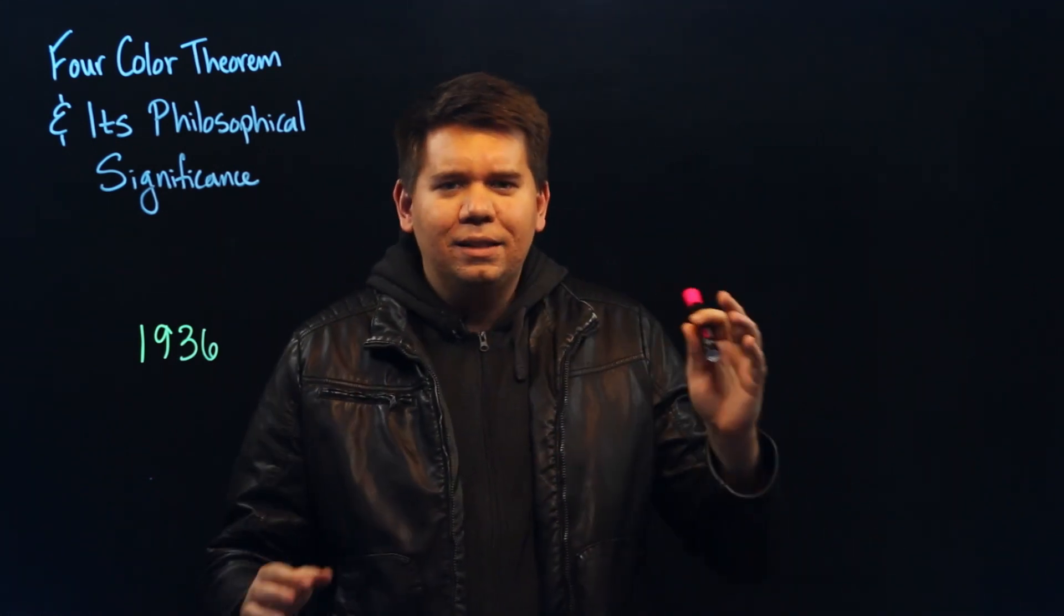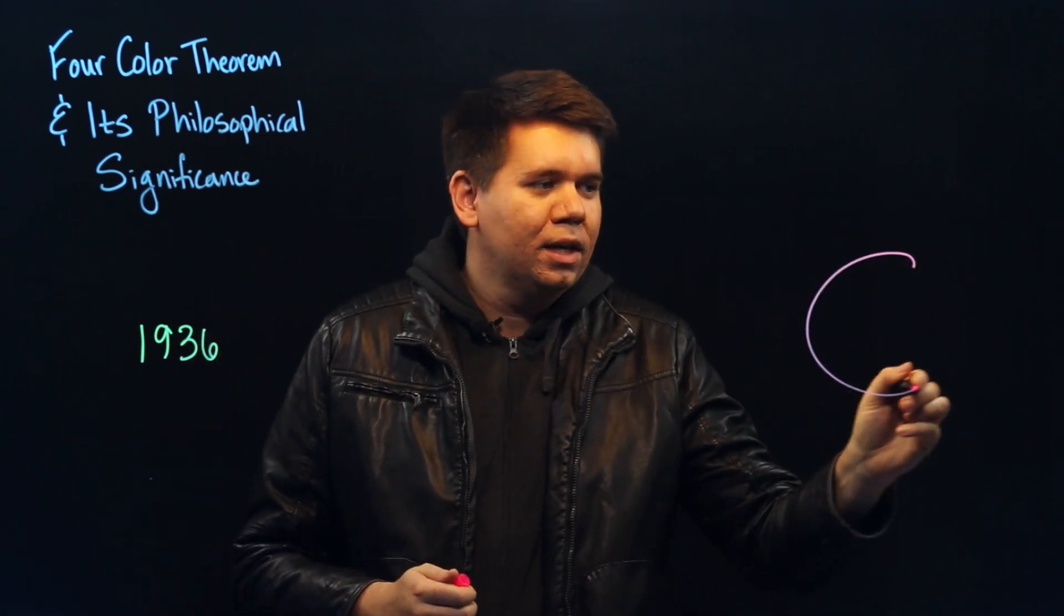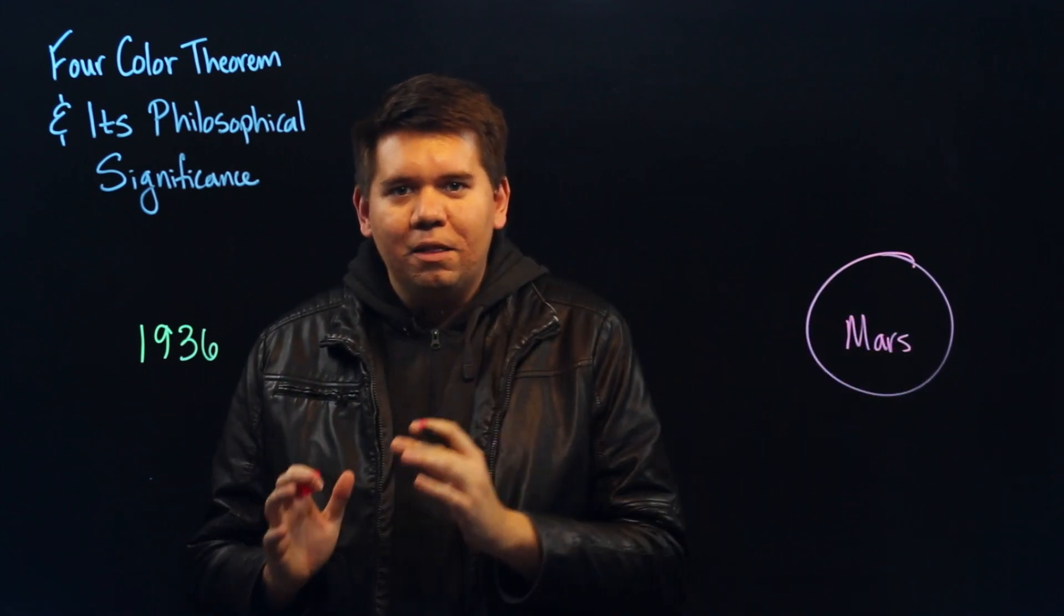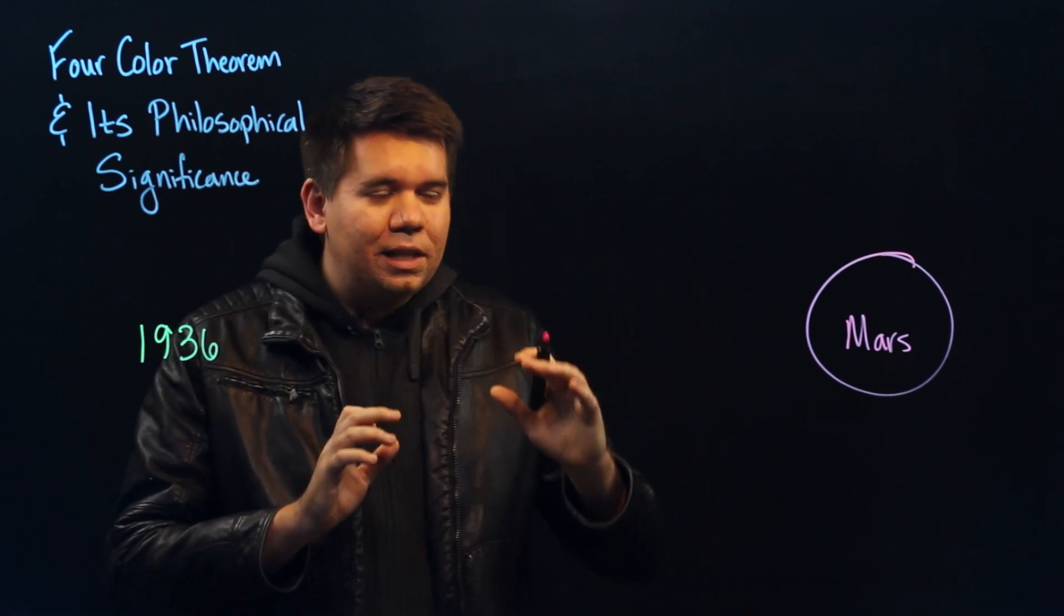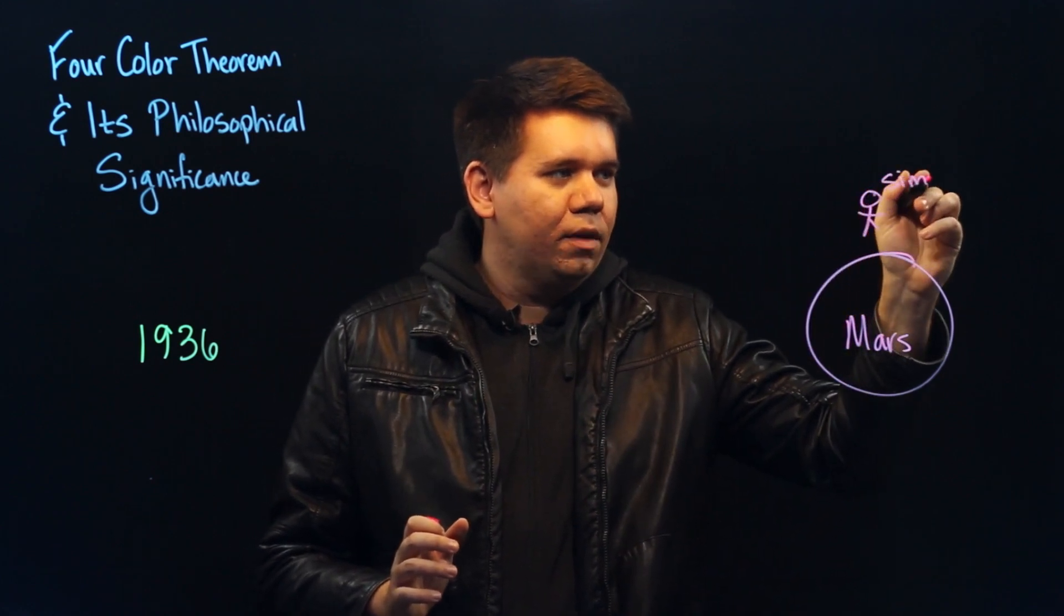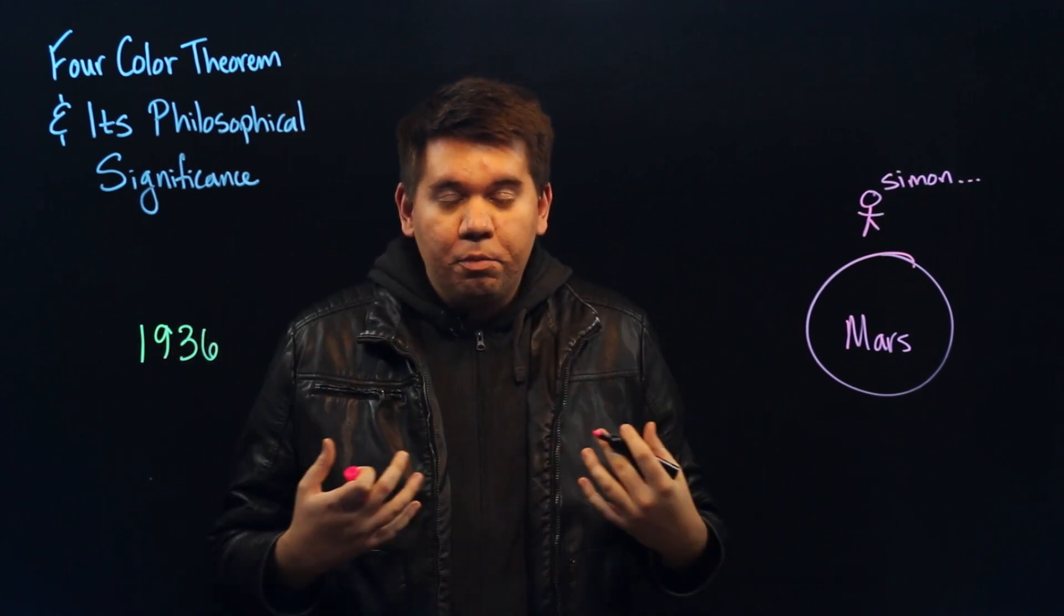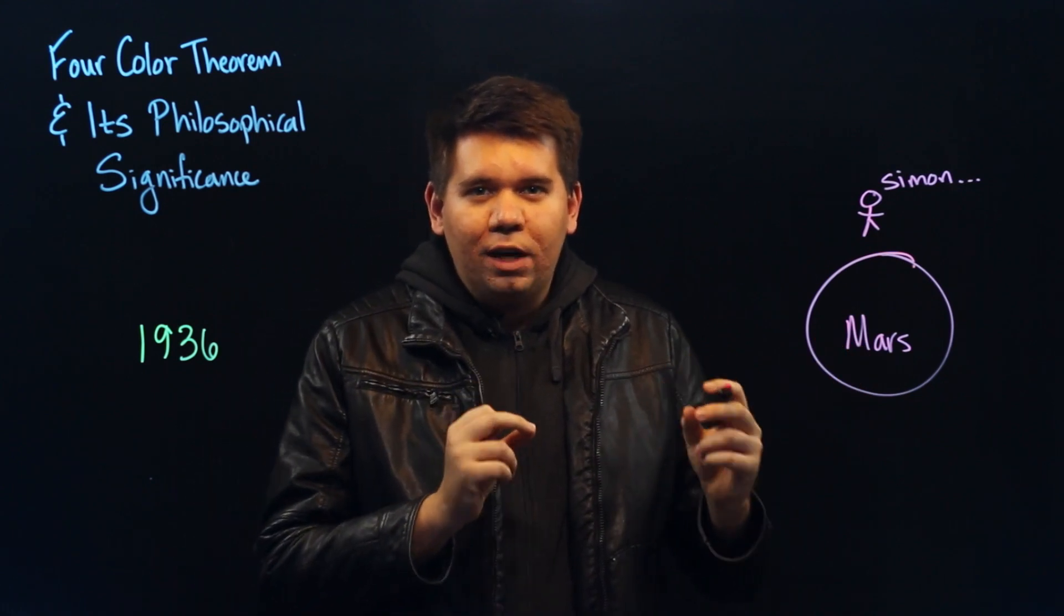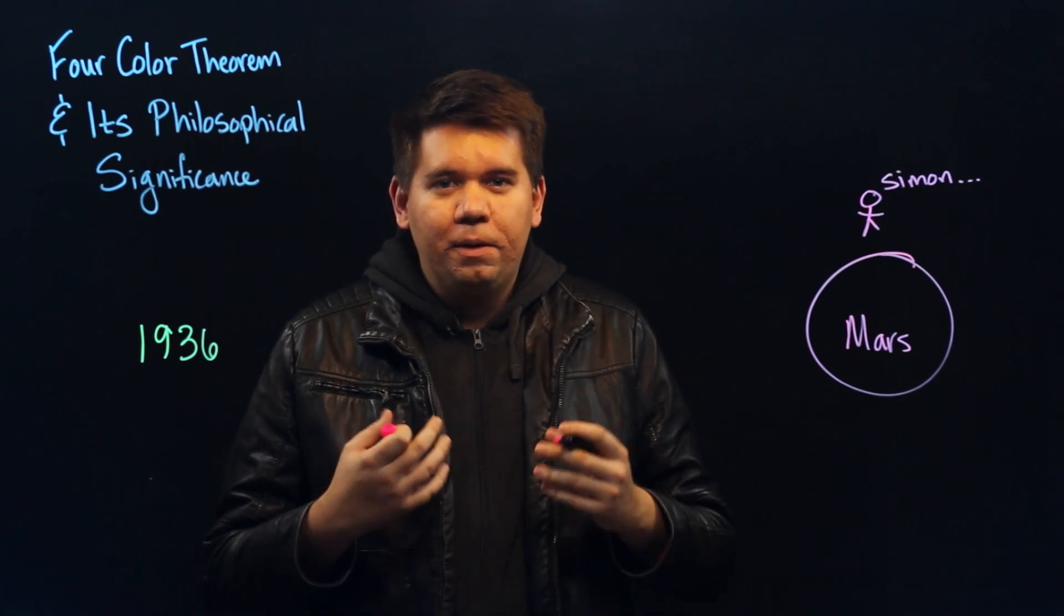They say, imagine if we had some other universe of mathematics. Perhaps we could call it Martian mathematics. Imagine this Martian mathematics developed very similar to mathematics on planet Earth. Except in Martian mathematics, there was a mathematical genius by the name of Simon. Now, Simon went along and proved mathematics as mathematicians were used to Simon proving it. But every so often, Simon would come up against a very challenging problem.